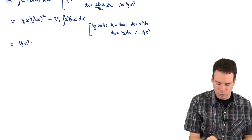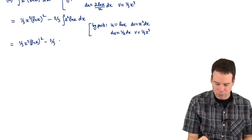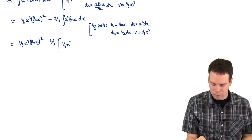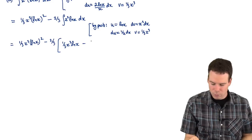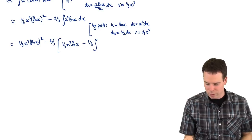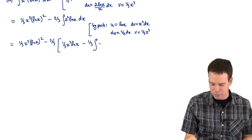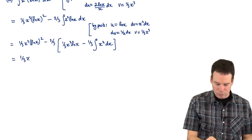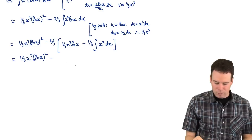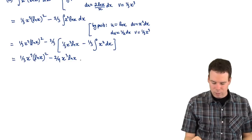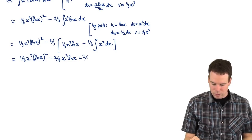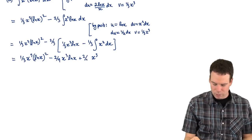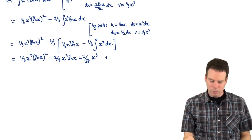Then du is equal to 1/x dx and v is equal to one-third x cubed. So this is one-third x cubed times (ln x)² minus two-thirds times the application of parts to this integral, which is one-third x cubed ln(x) minus one-third times the integral of x squared dx. And I've reduced it now to just the integral of x squared, which gives us one-third x cubed (ln x)² minus two-ninths x cubed ln(x) plus two-ninths times one-third x cubed, giving two over 27 x cubed plus c.